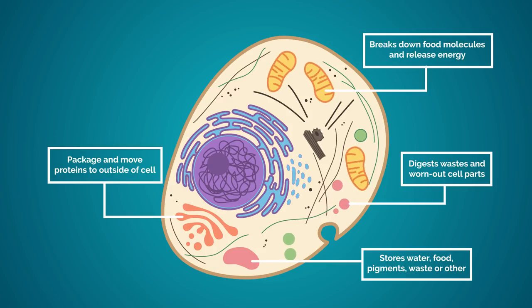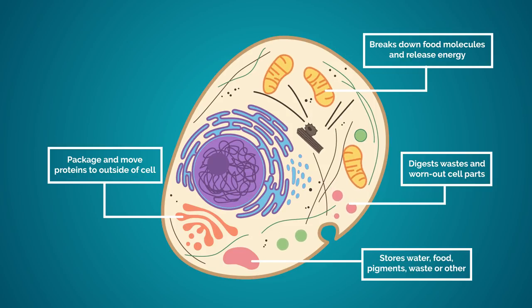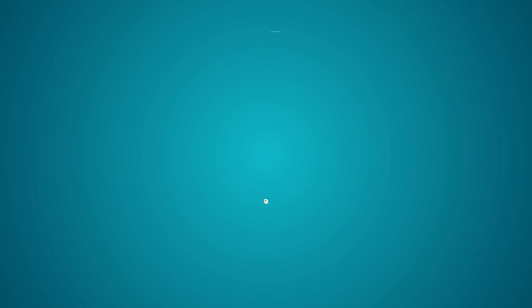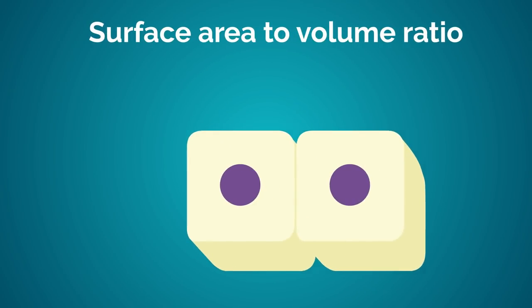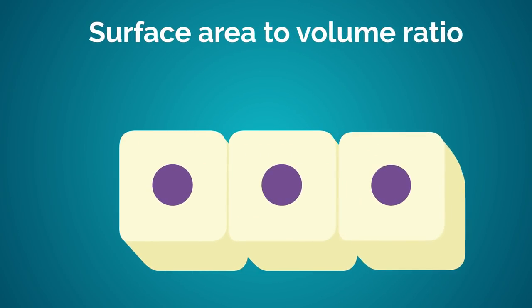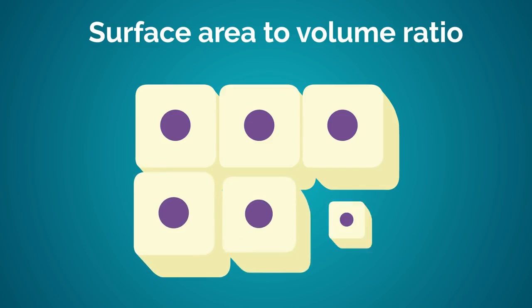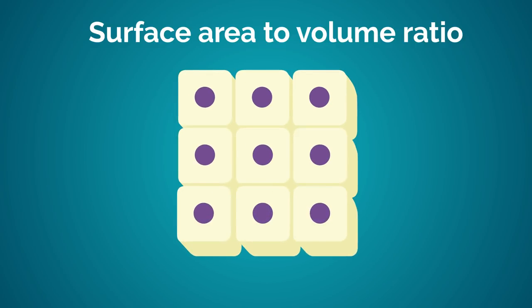But bigger doesn't necessarily mean better. The small size and simplicity is an advantage to prokaryotes — it suits their lifestyle. Being small means they have a large surface area to volume ratio, and so they can easily meet their nutritional needs to grow quickly and multiply rapidly.